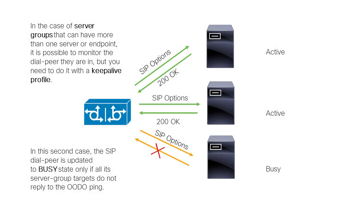However, in the case of server groups that can have more than one server or endpoint, it is possible to monitor the dialpeer they are in, but you need to do it with a keepalive profile. In this second case, the SIP dialpeer is updated to busy state only if all its server group targets do not reply to the out-of-dialog options ping.